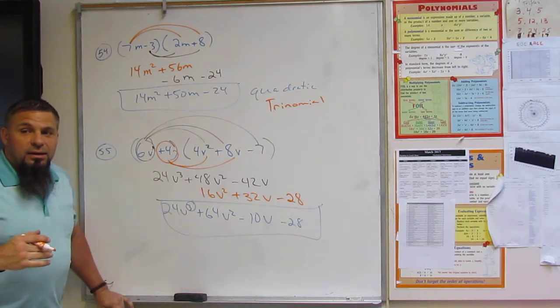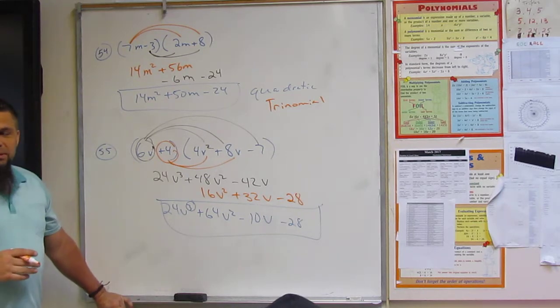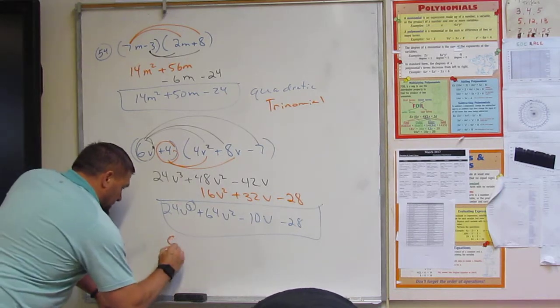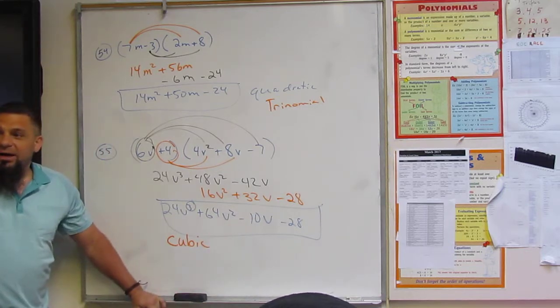Third degree. Which is a? Trinomial. I don't know. Not trinomial. Third degree. So is it? Cubic. Cubic. Octagonial. Cubic. And what do we call it?